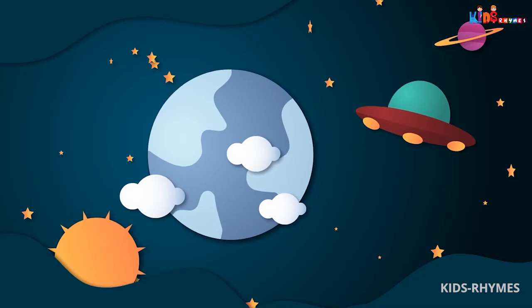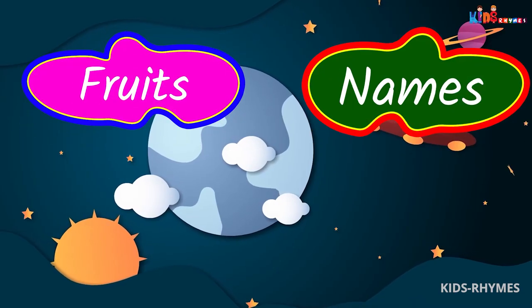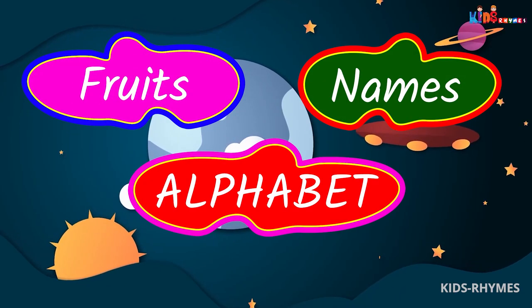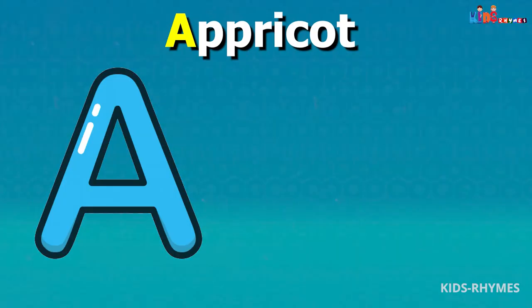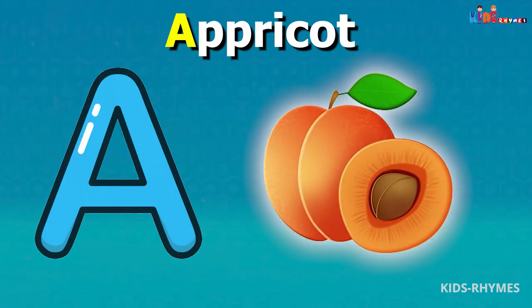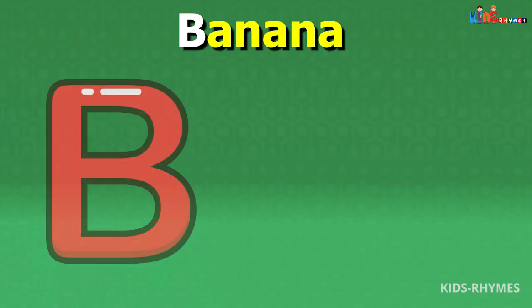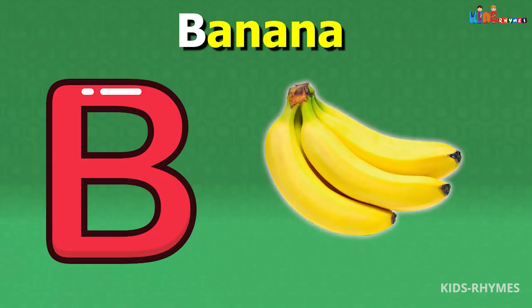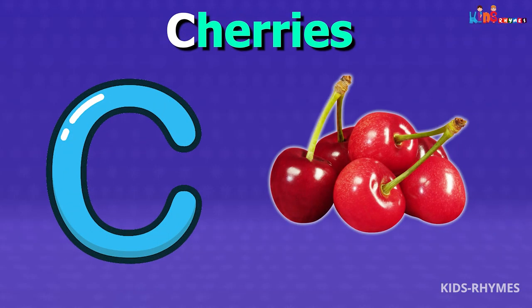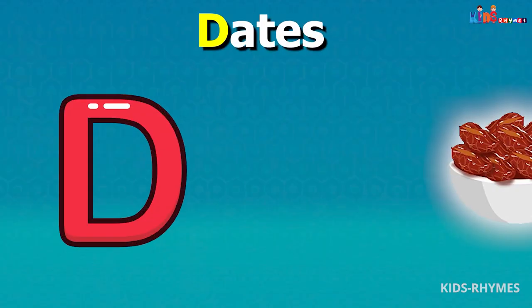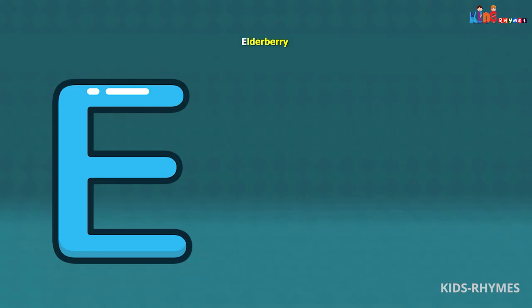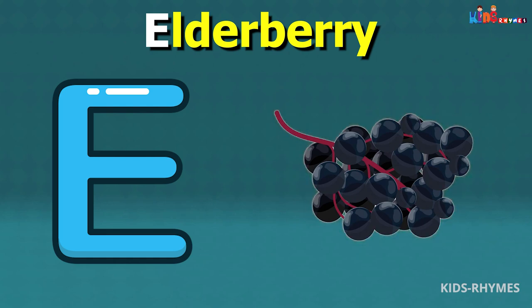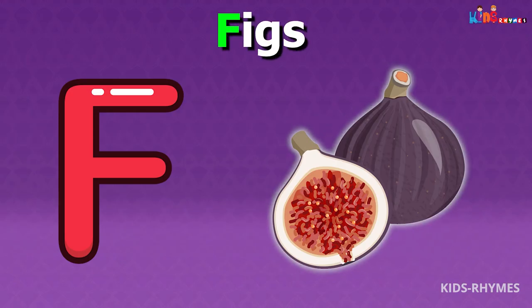Fruits name according to alphabets. A for apricots, B for bananas, C for cherries, D for dates, E for elderberries, F for figs.